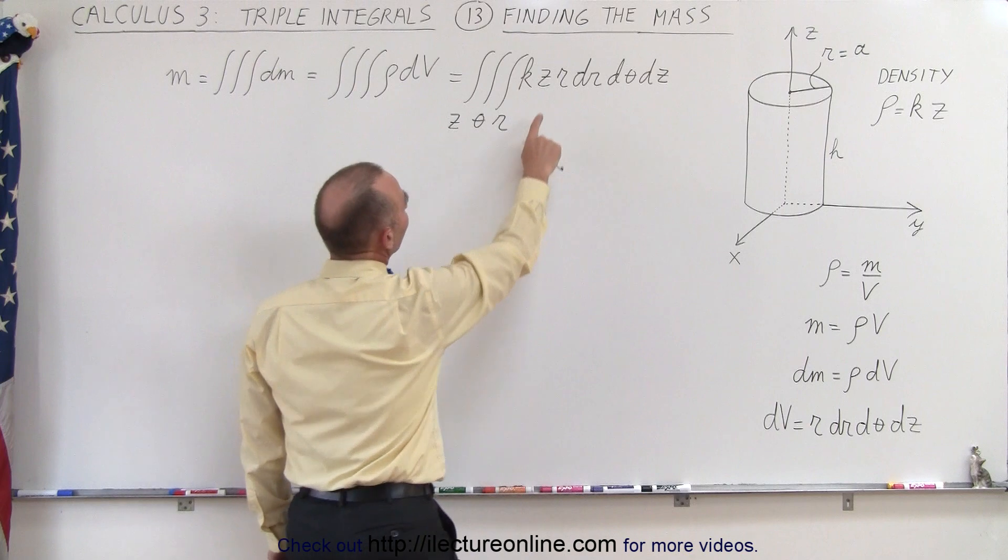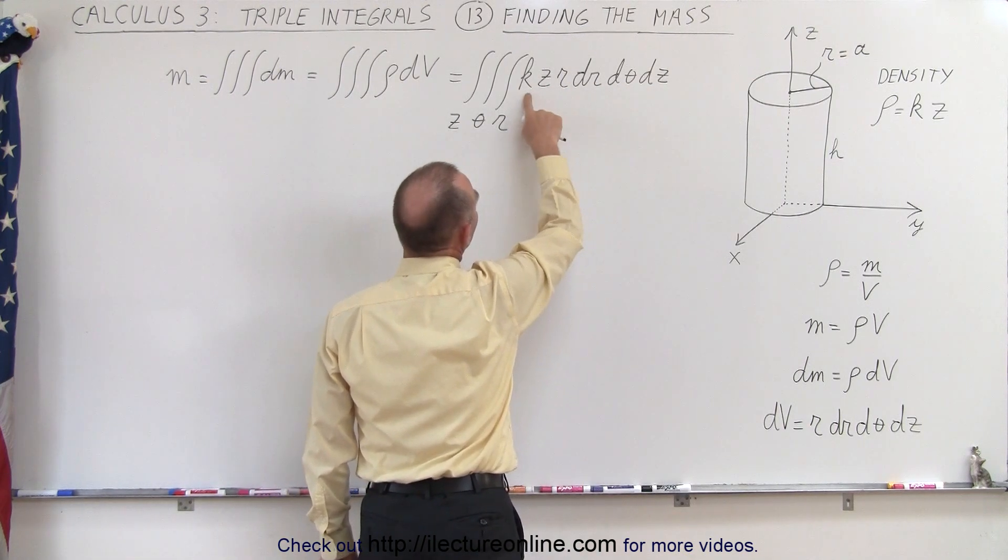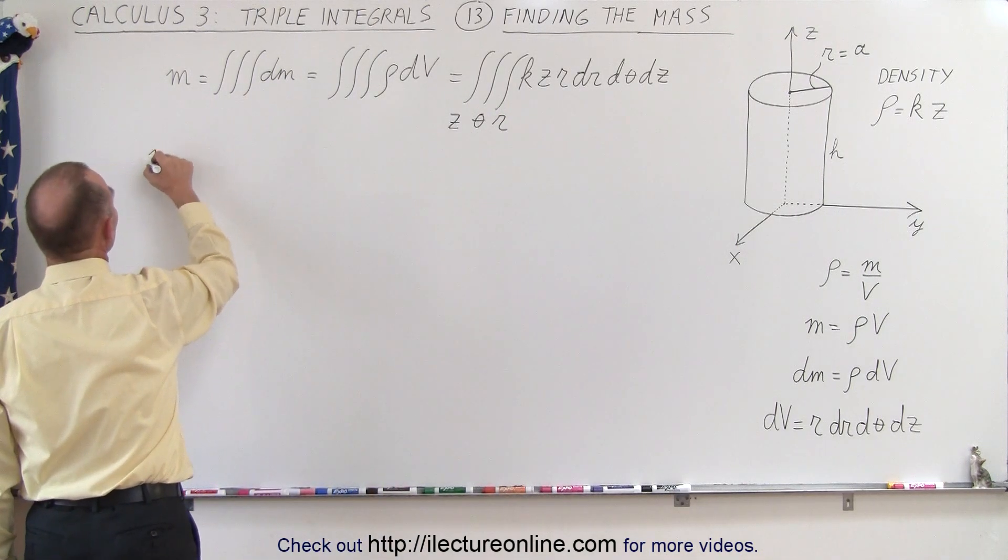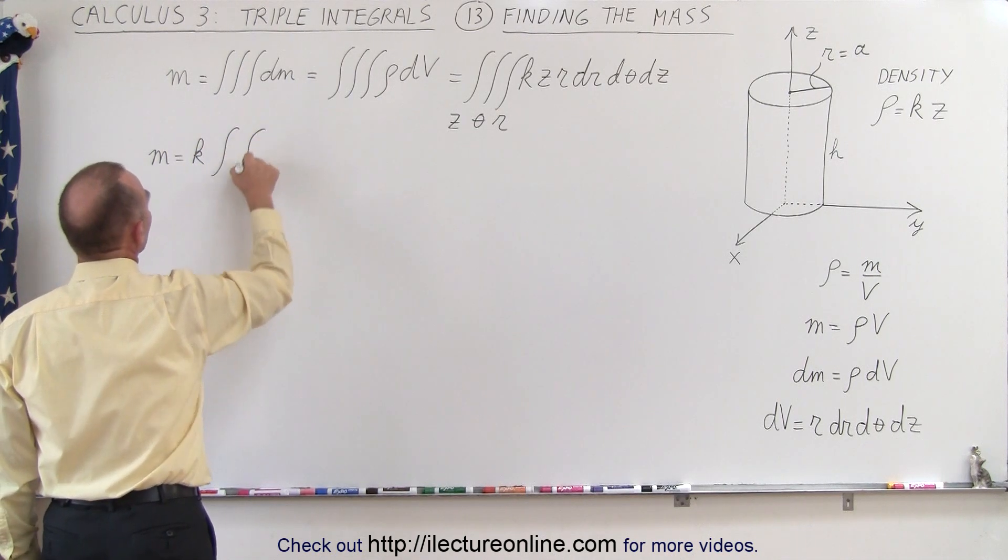Also notice we have the z here so that goes with the dz. We have an r that goes with the dr, and k is a constant which can come outside the integral sign. So the mass equals k times the triple integral.